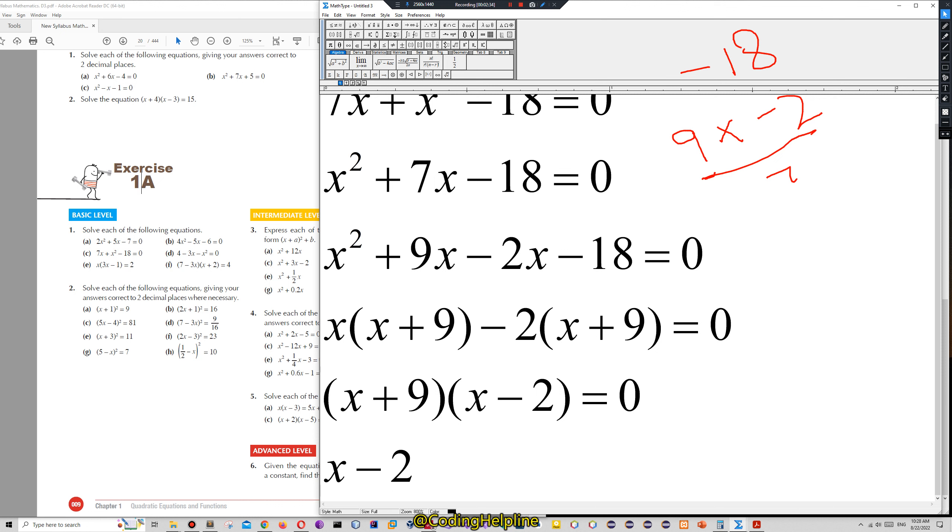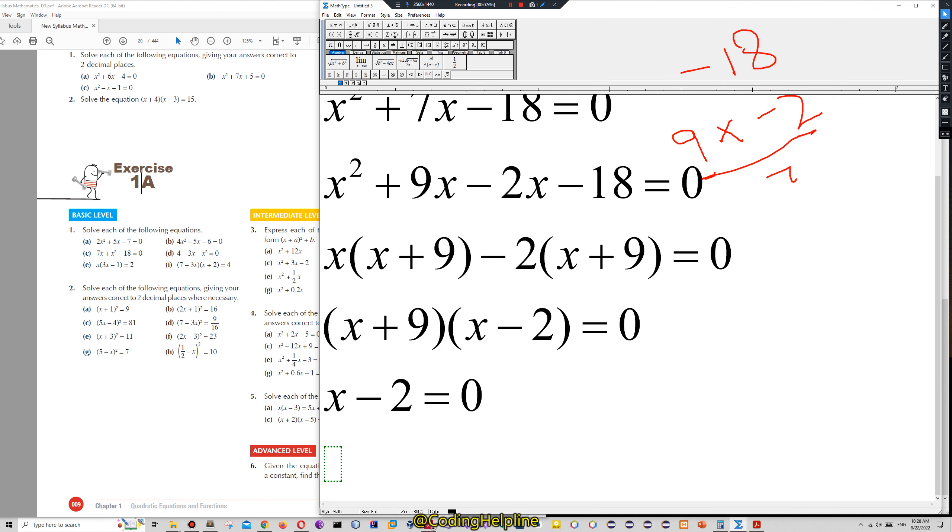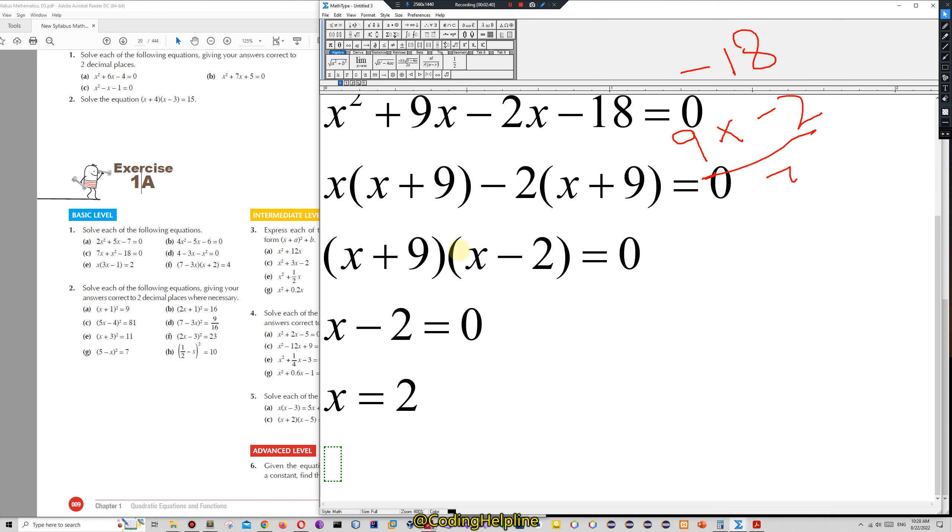So we group the terms x plus 9, x minus 2. We can eliminate x plus 9 to get x minus 2. That will be one root of the quadratic equation. So we will be left with x minus 2 is equal to 0, and that gives us x is equal to 2.